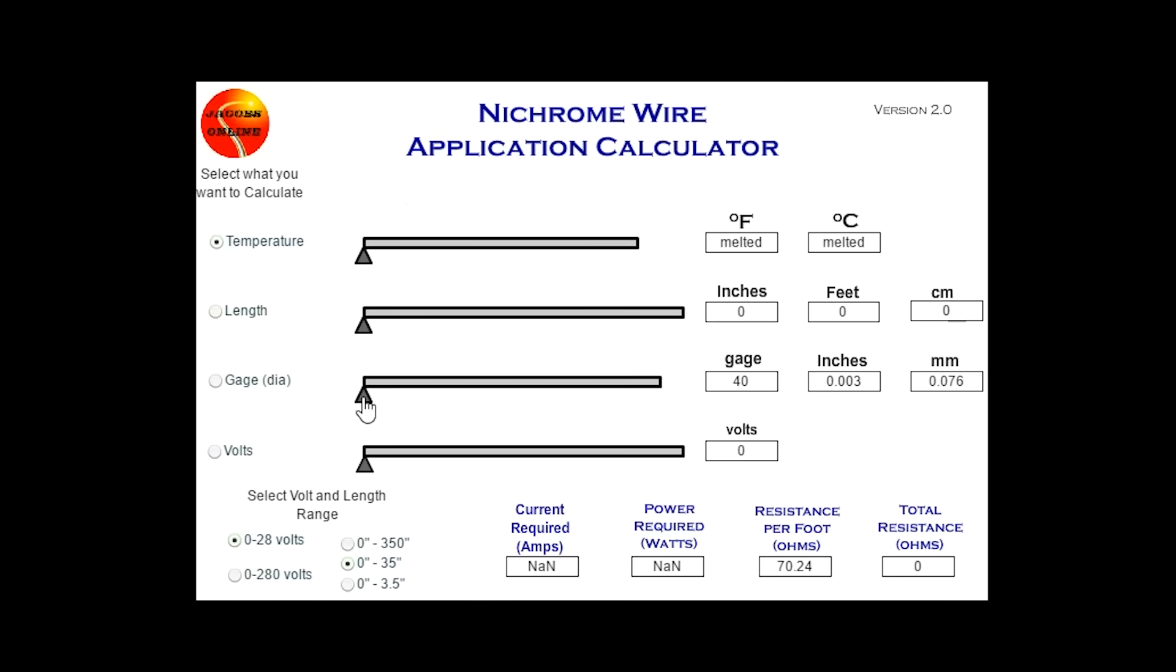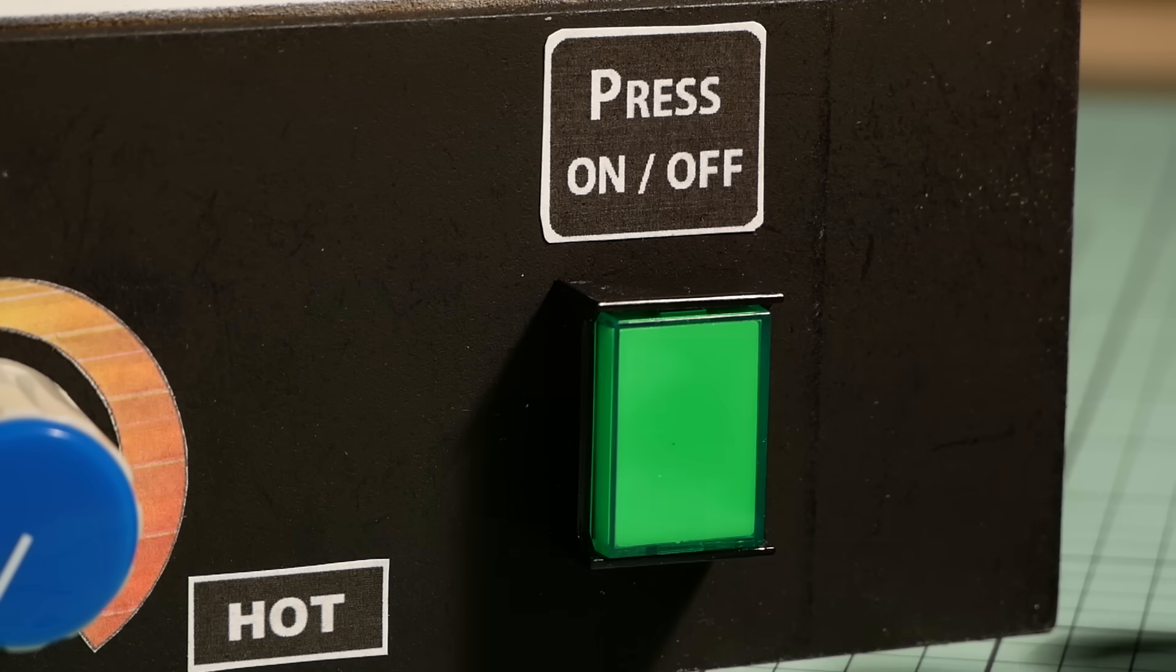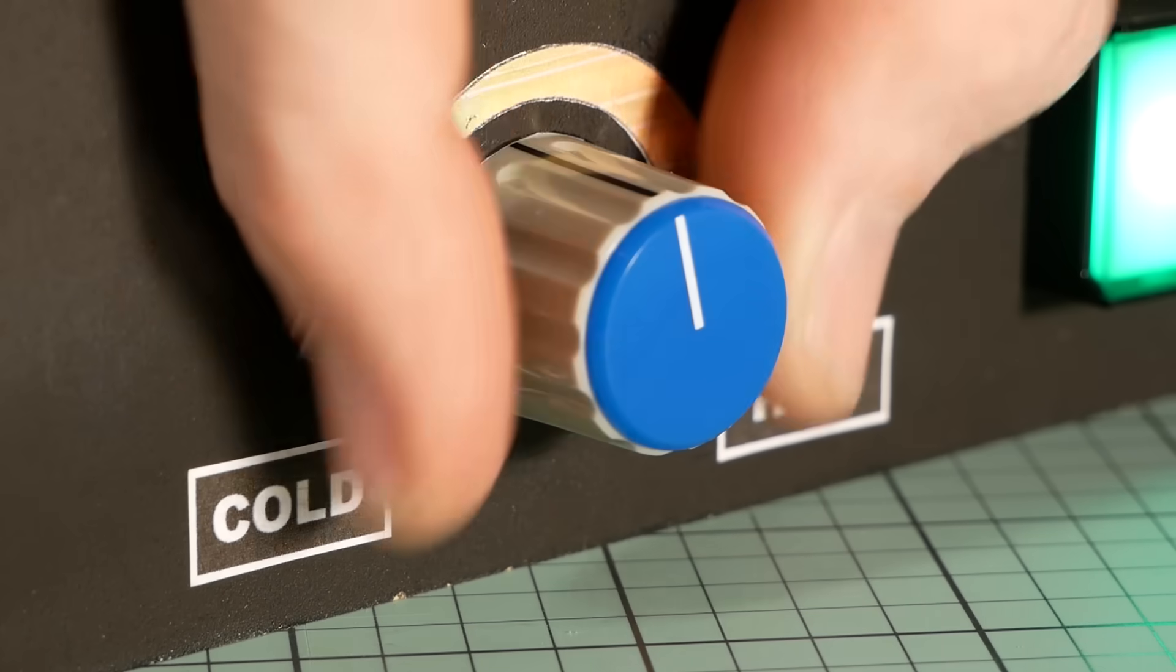In my case I made my wire foam cutter using 28 gauge nichrome wire. I have a length of 22 centimeters and I want to heat the wire up to at least 600 degrees Fahrenheit. So by selecting the temperature and then dragging the volt slider I can see that to get 600 degrees I only need about 5 volts and 1.6 amps. So as long as my power source is more than that I know I'll be able to safely heat the wire without damaging the power source.